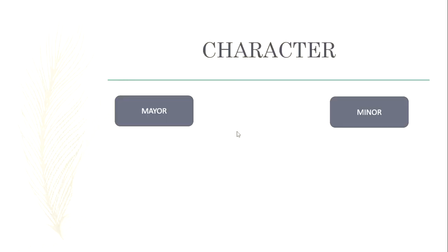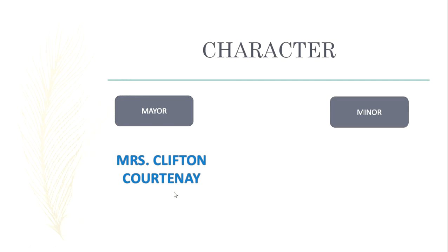And the third is character. It consists of two points: major and minor. The major is of course Mrs. Clifton Courtney, the charming woman. She was so charming and clever, and had a low, soft tone. She also had a deep thought about social and politics. And then the minor characters in this story — I have 7 persons, including the narrator or Mr. Anybody.